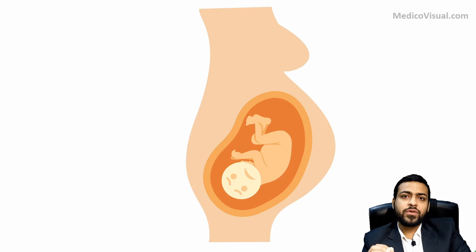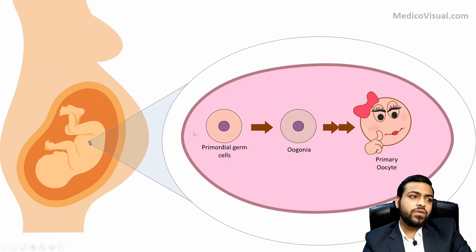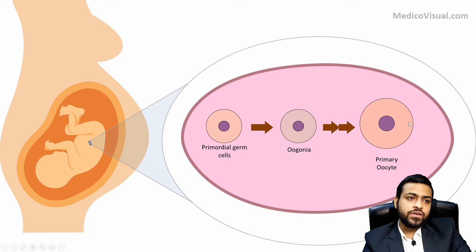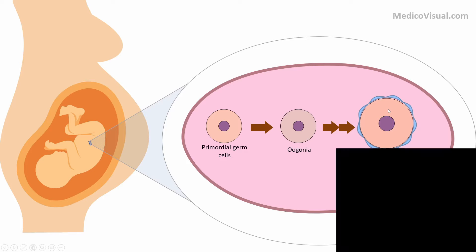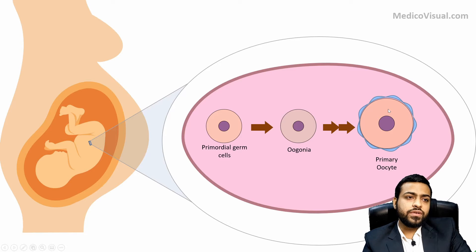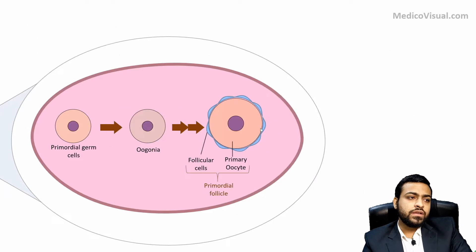Even before a female baby is born, she is worried about preparing for her future generation. Here is the schematic diagram of her ovary, and inside the ovary there are millions of primordial germ cells. These primordial germ cells first form oogonia and ultimately form primary oocytes, which are ready to undergo meiosis. Before meiosis can start, a layer of cells surrounds the oocyte to protect it from the immune system, because meiosis produces daughter cells with different genetic makeup due to crossing over. This primary oocyte along with its follicular cell layer is called the primordial follicle.